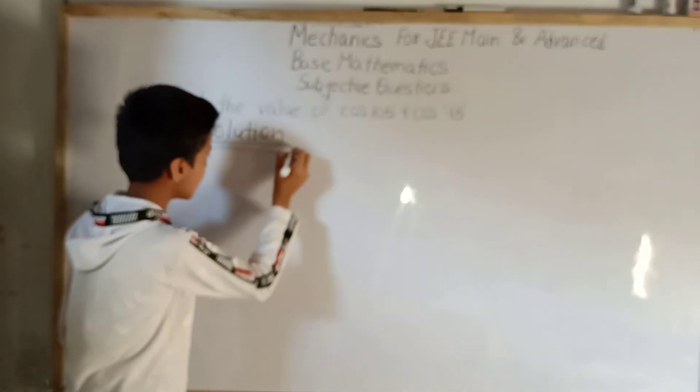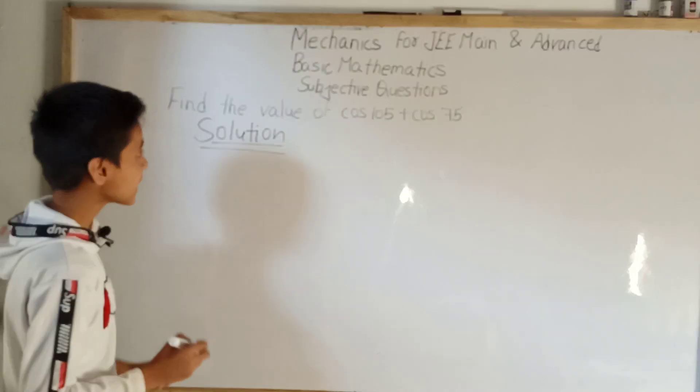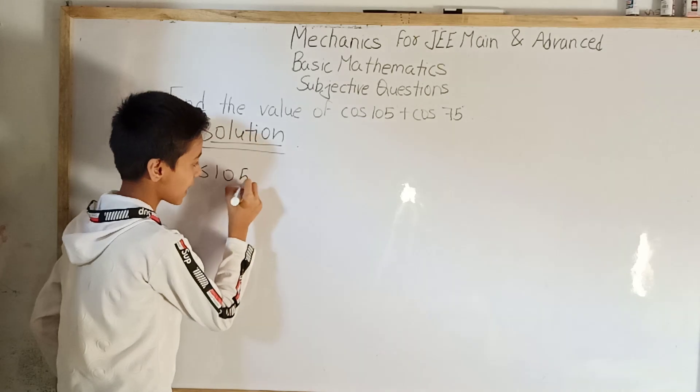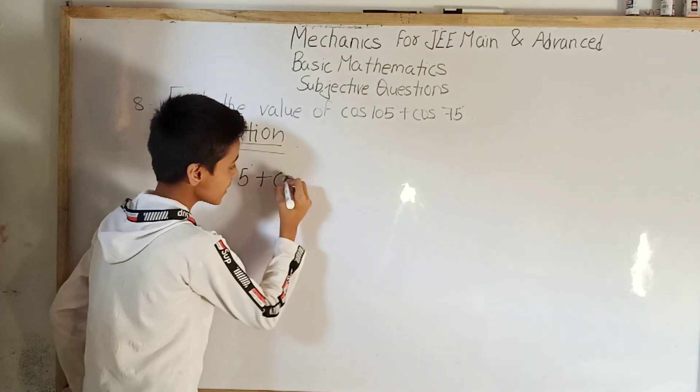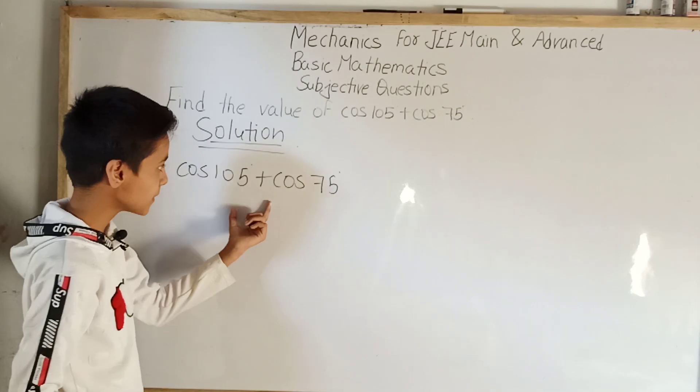Here we have question number 8: find the value of cos 105 degree plus cos 75 degree. This we have to solve. Let us note it here: cos 105 degree plus cos 75 degree. We have to add cos 105 degree and cos 75 degree.